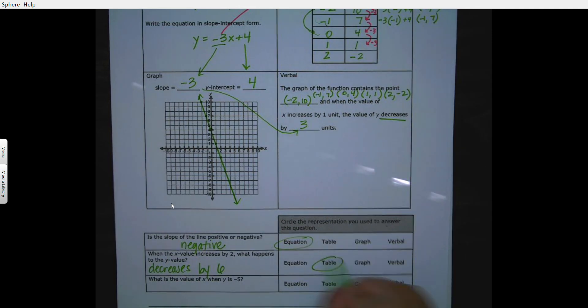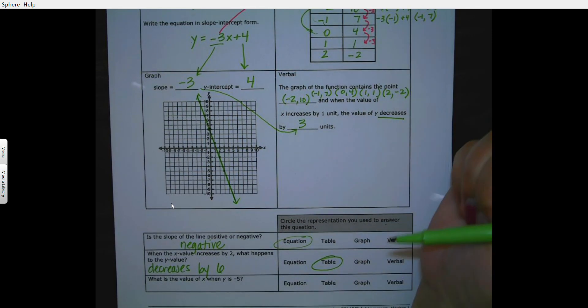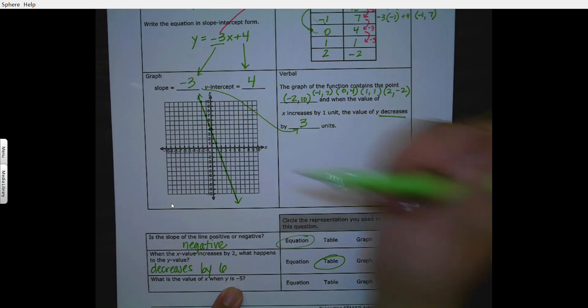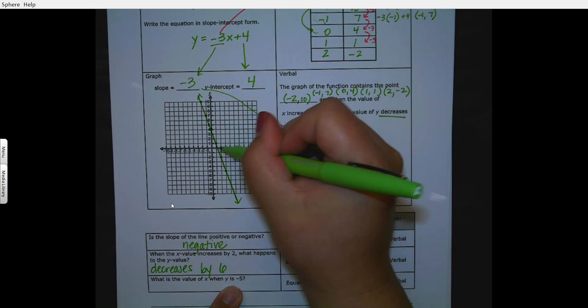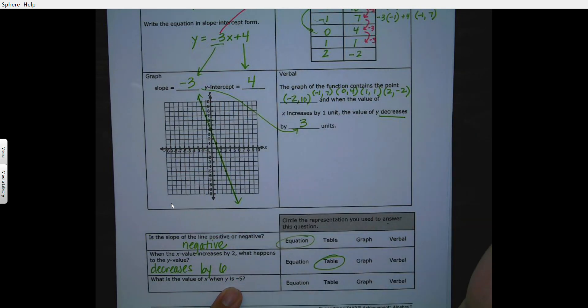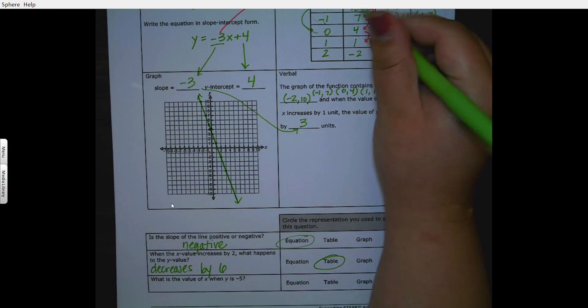What is the value of x when y is negative 5? What is the value of x when y is negative 5? So I'm actually going to go over here when y is negative 5. Oh, that's off my graph, so I can't use my graph. When y is negative 5.